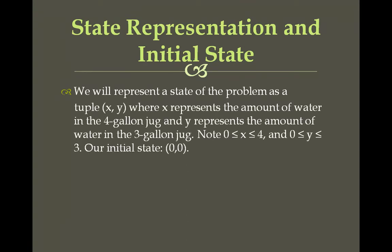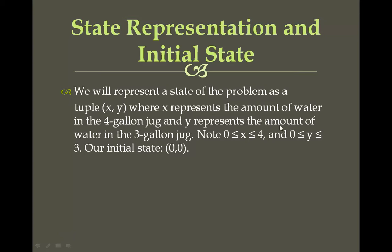To solve this, we represent the problem in the form of a state as a tuple with two variables, x and y. Here x represents the amount of water filled in the 4-gallon jug, and y represents the amount of water in the 3-gallon jug. X can be between 0 and 4, and y can be between 0 and 3, since they cannot exceed their respective jug capacities.